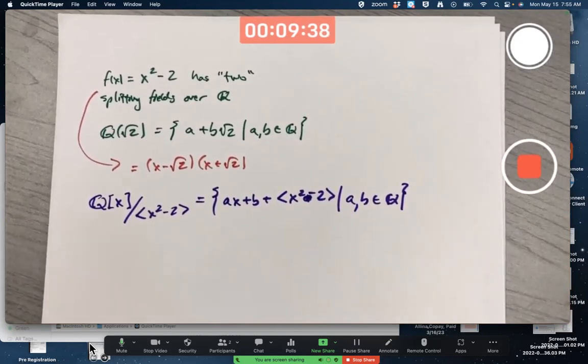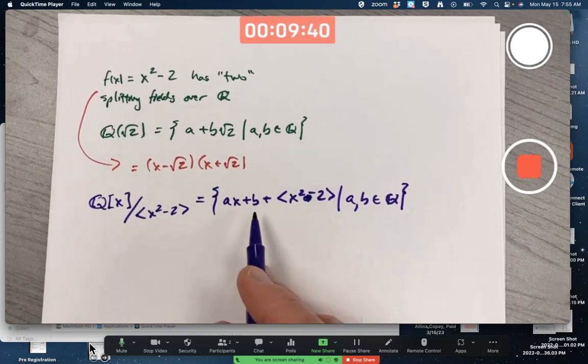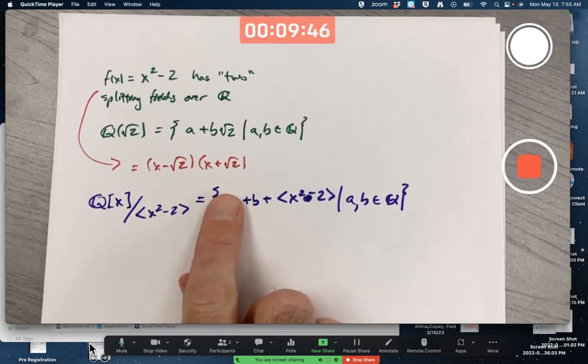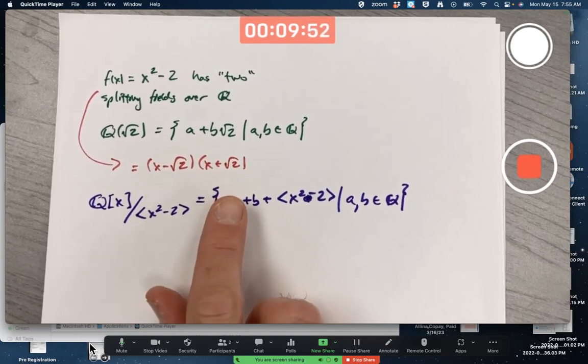I've said this is a splitting field of this polynomial, and it is a field extension of Q, because you can take a to be 0 and effectively think of those kinds of cosets as being rational numbers. They're not really rational numbers, but that's the way algebraists think.